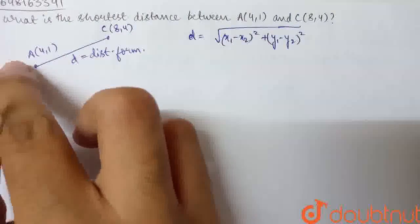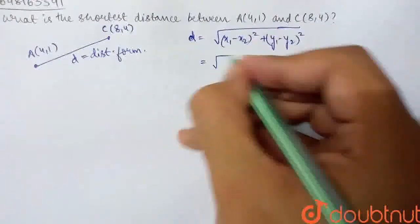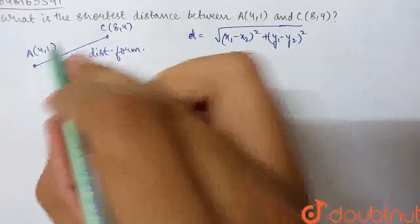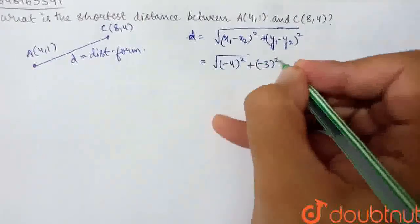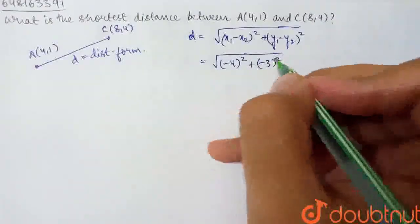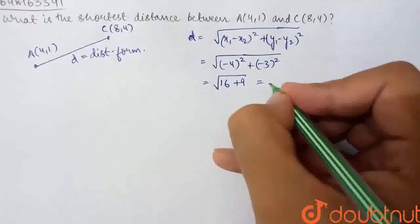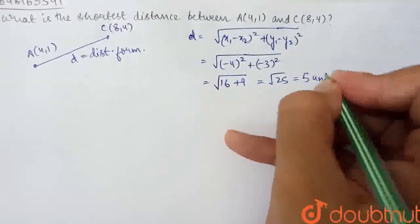So let's suppose x1, y1, x2, y2. We get root of 4 minus 8, that is minus 4 whole square, plus 1 minus 4, that is minus 3 whole square. So minus 4 whole square or 4 whole square, that is 16 plus 9. Root 16 plus 9, that is root 25, which is equal to 5 units.